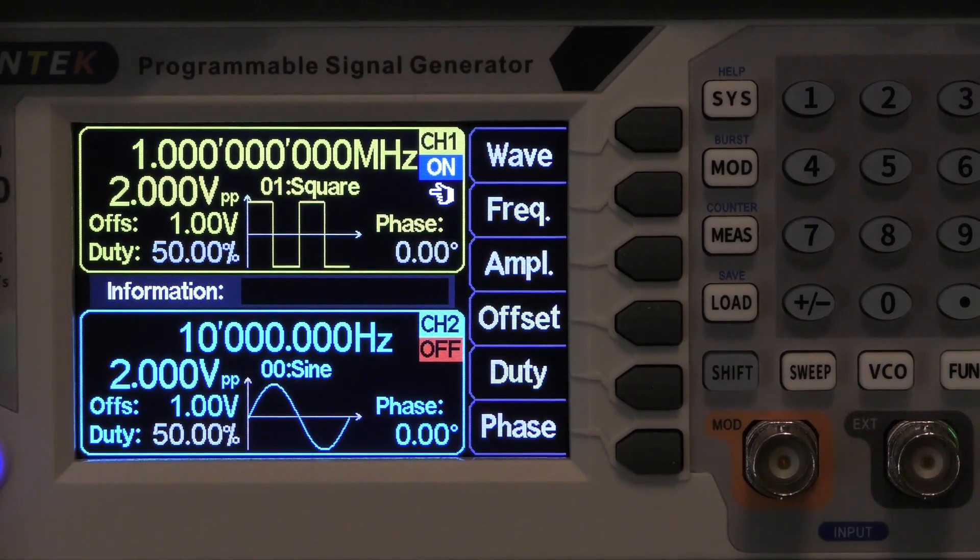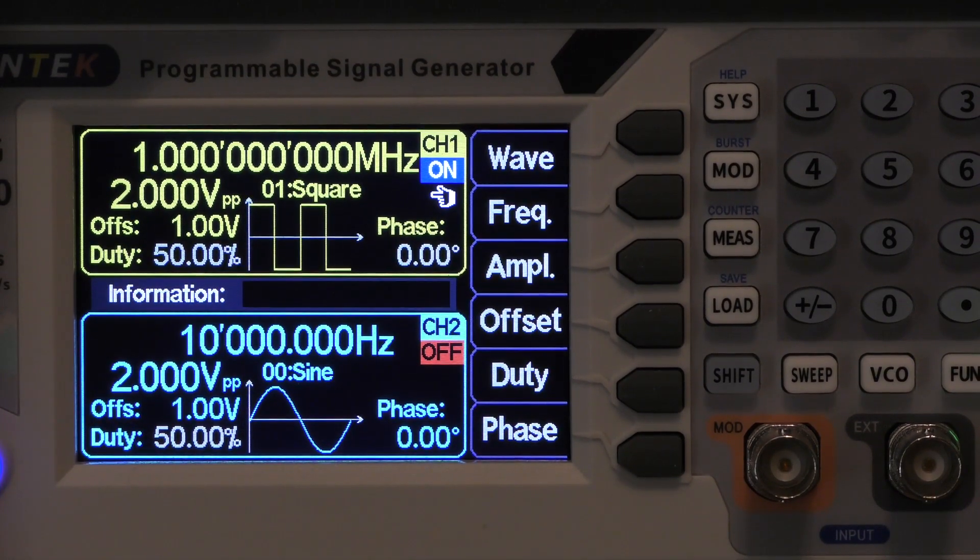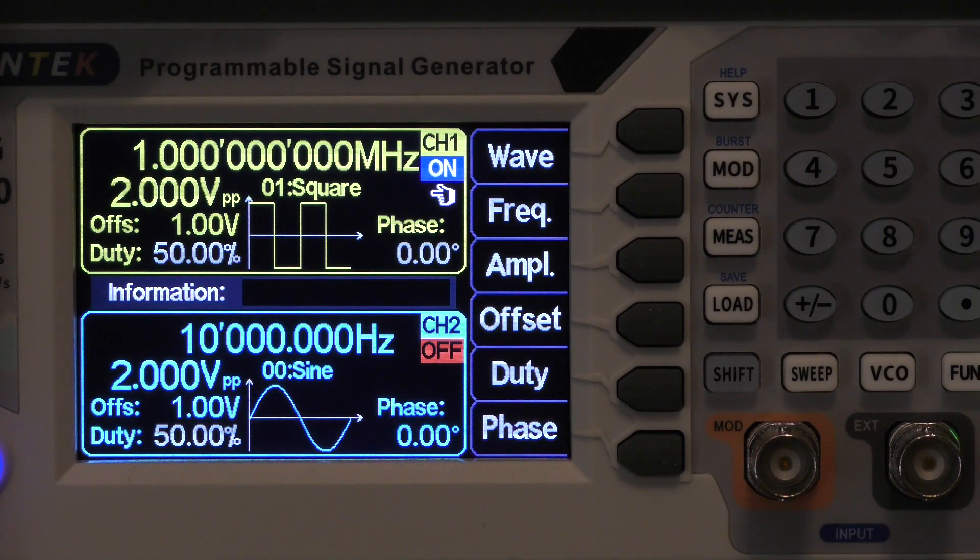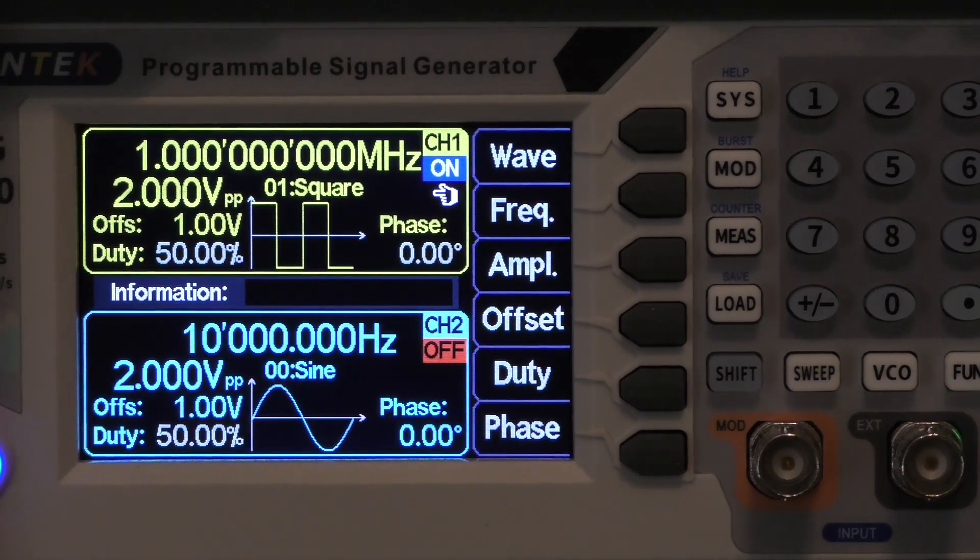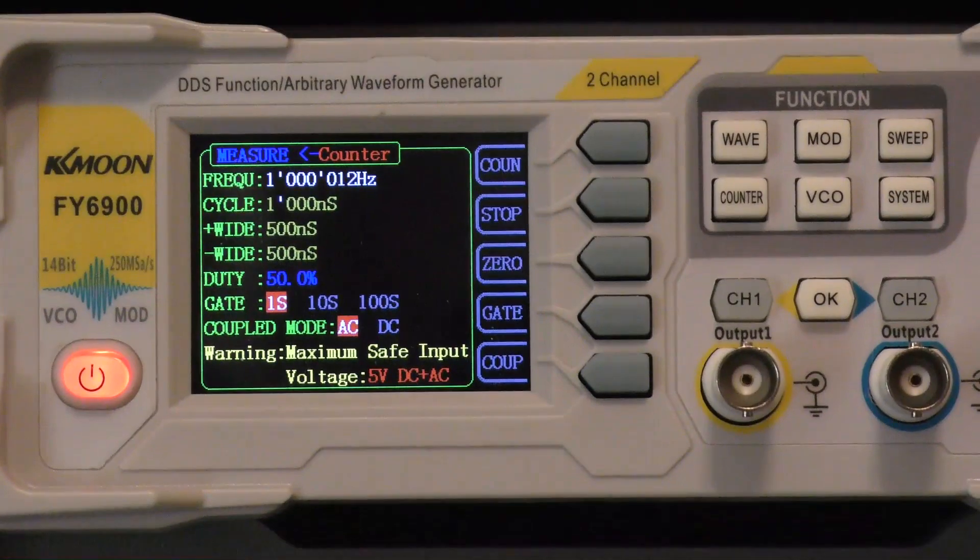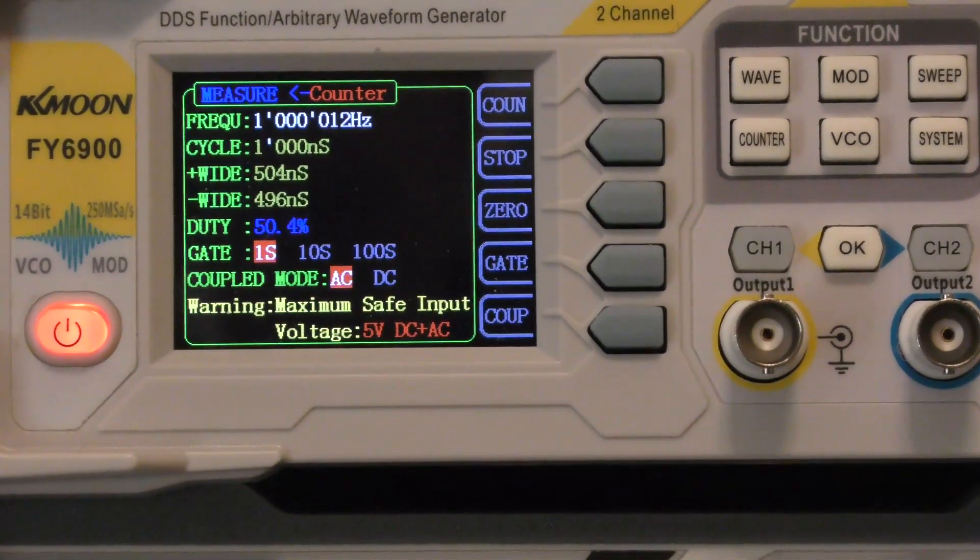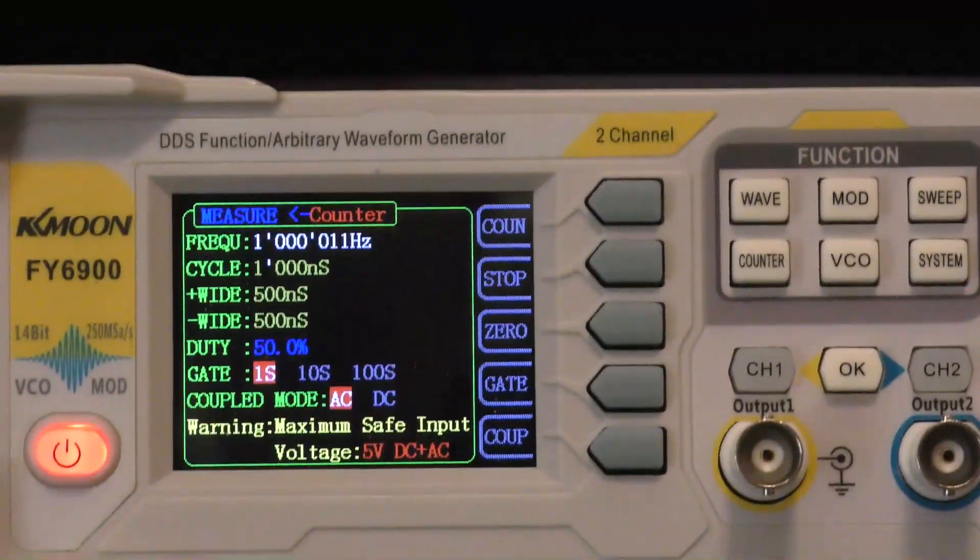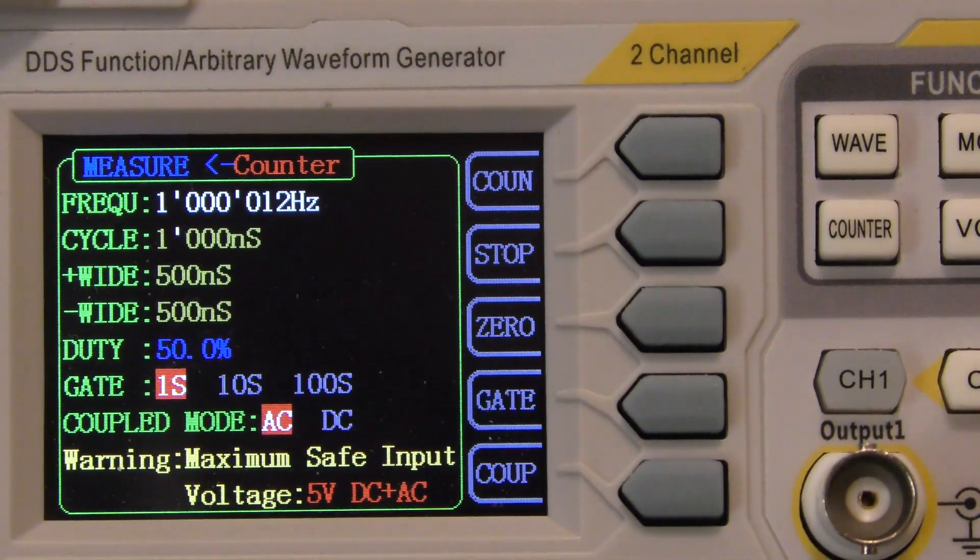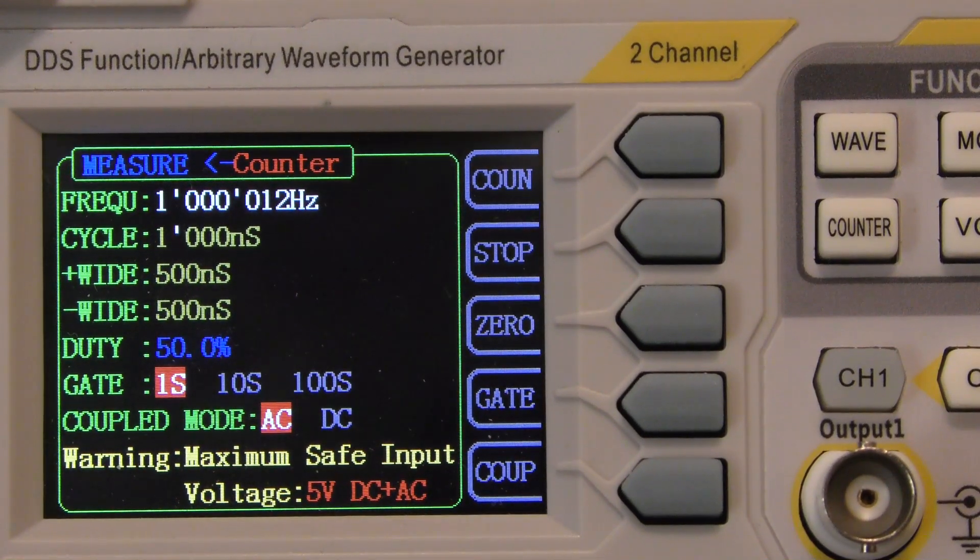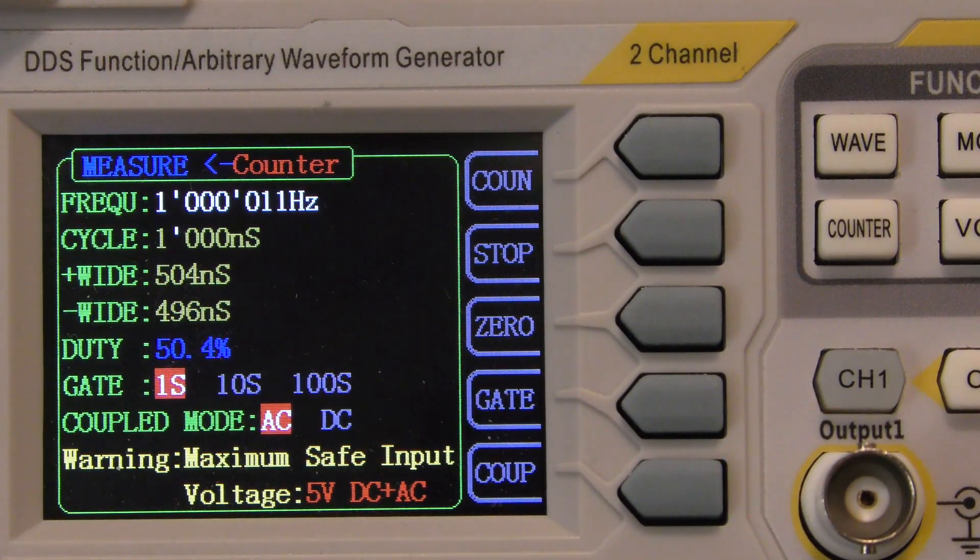Now I've set the Juntech to a 2 volt peak-to-peak square wave at a megahertz, and I've connected its output to the counter input of the FY6900. Now let's zoom in on that. You notice that what it shows is the same. I don't know if you remember how much I had to offset this generator to make it sync up with the Juntech, but it turns out they are exactly the same.